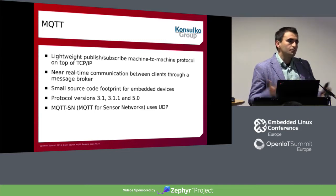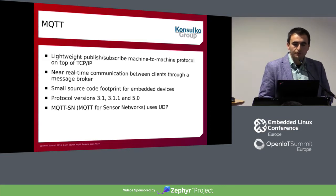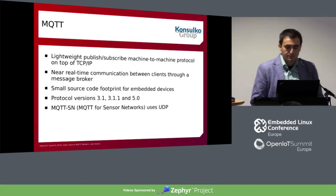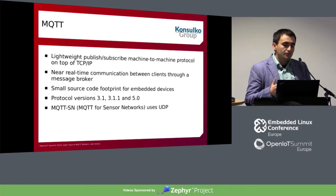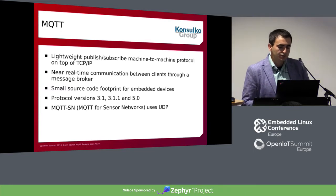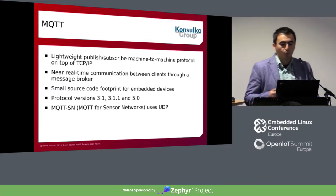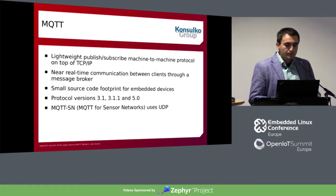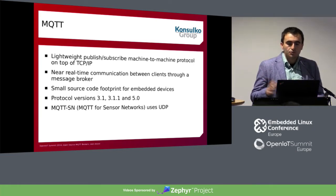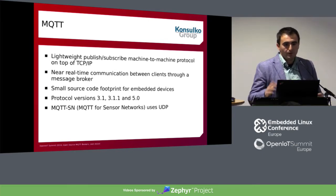You can also use MQTT for large-scale industrial automation machines. There have been several versions of the protocol; the latest version is 5, but this presentation is primarily focusing on versions 3.1 and 3.1.1. There is also MQTT for Sensor Networks which uses UDP instead of TCP, but MQTT-SN will stay out of the scope of my talk.